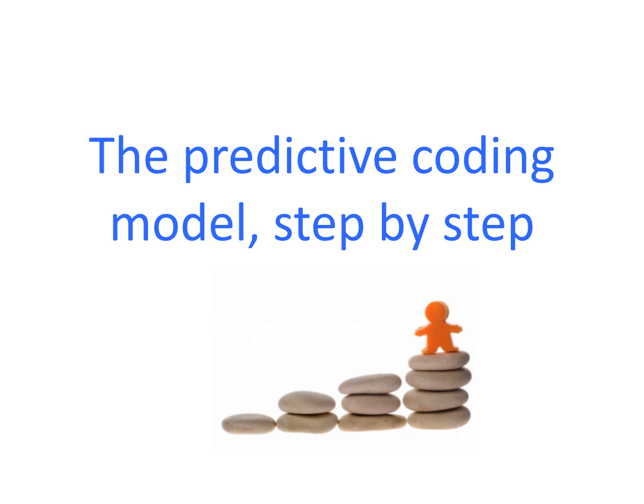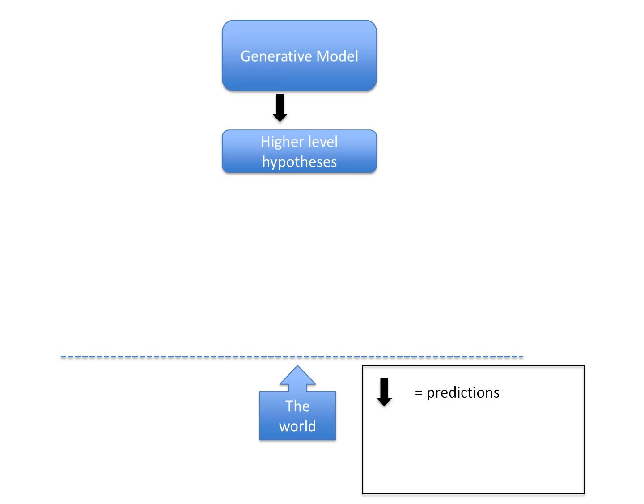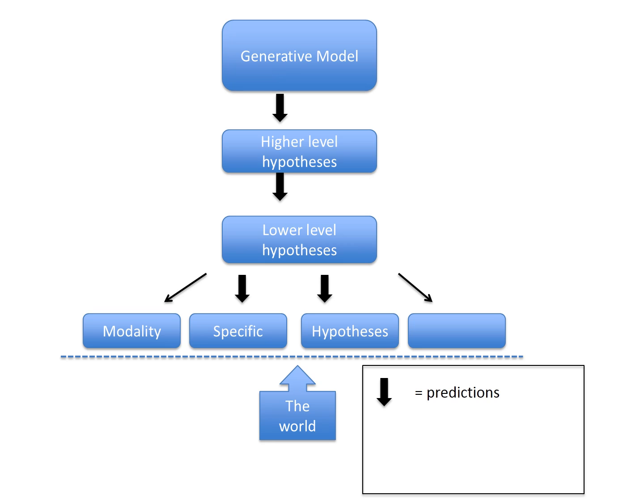Let's run through the predictive coding model step-by-step. The task before us is to predict the hidden cause out in the world. To do so, we begin with a generative model whose business is to extract patterns or statistical regularities from the world and use them to generate predictions or hypotheses about what the object or scene in question is. These hypotheses, in turn, constrain the generation of hypotheses at the lower levels, and so on, all the way down. For simplicity, I've just got a few levels here. The lowest-level hypotheses will be specific to each modality. Here, the hypotheses are compared with the incoming information from the senses.